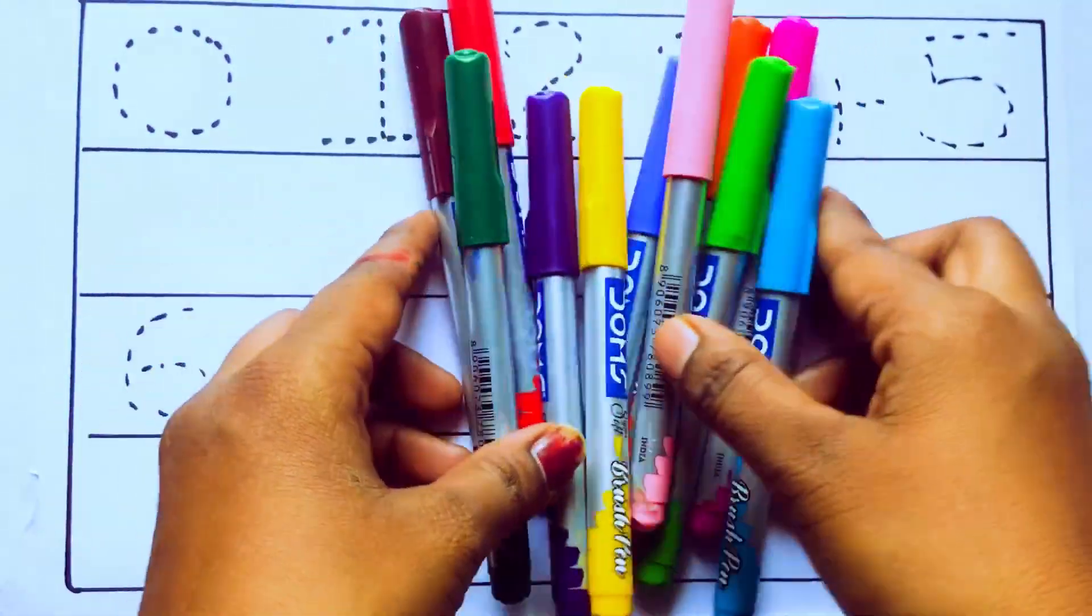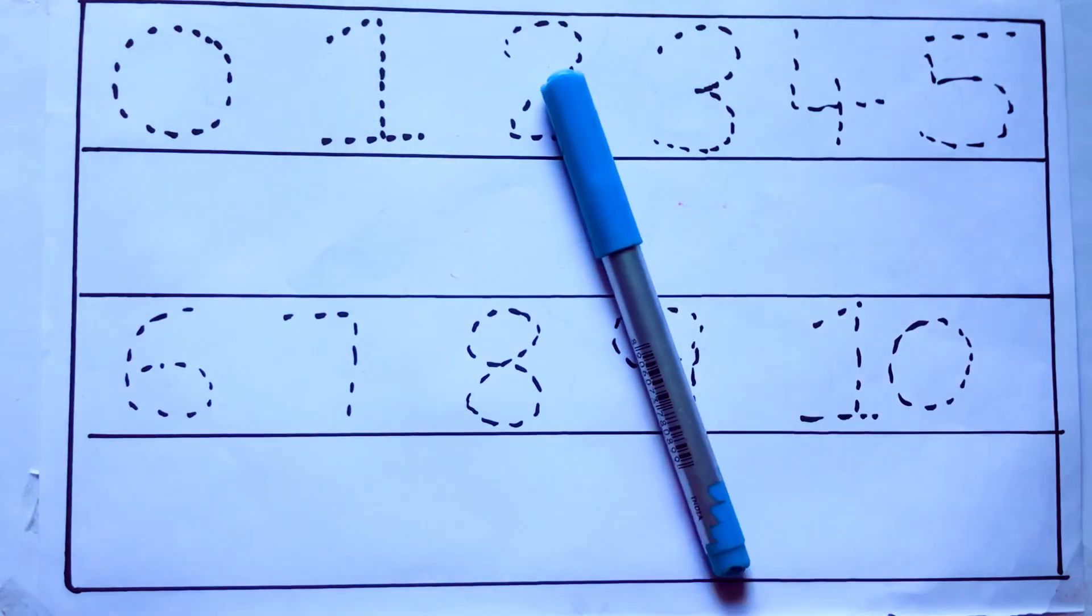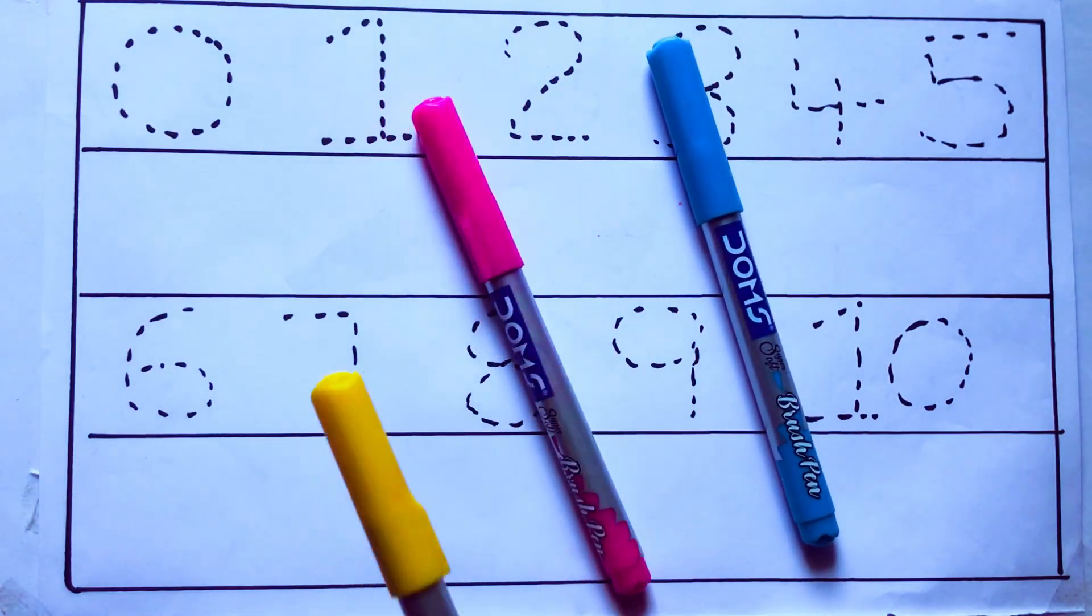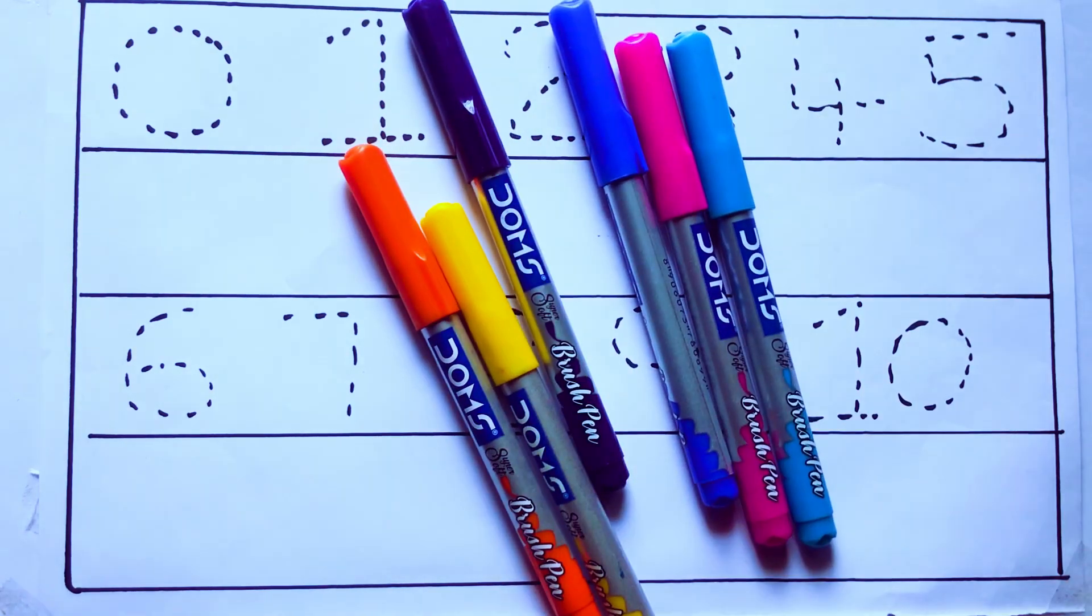Let's learn some colors. These are all the color pencils. Let's learn the names. Sky blue color, pink color, yellow color, orange color, violet color, blue color.